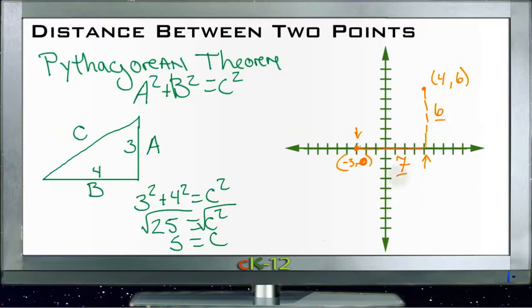The distance between the two points is the long side of the triangle. We'll use the Pythagorean theorem: 6 squared plus 7 squared equals c squared, the distance we want.